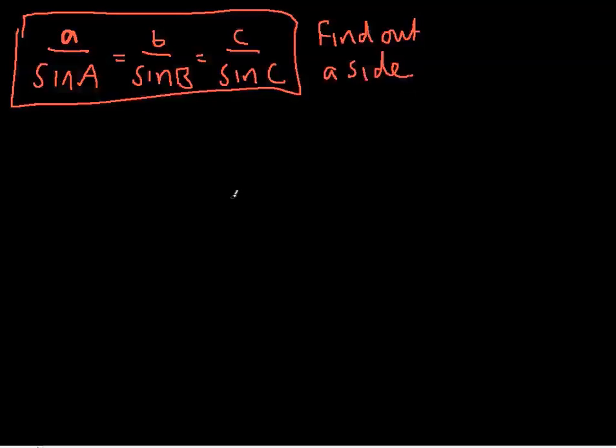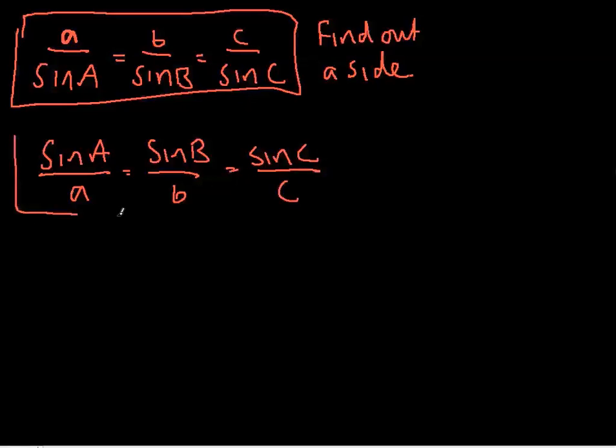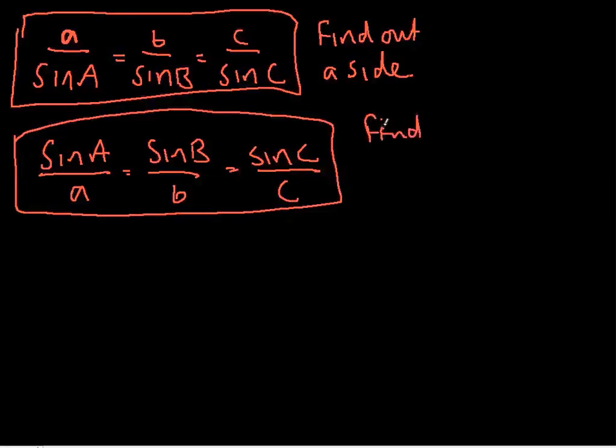So you use this one when you want to find out a side. And then you want to find out the angle, use the sines at the top. So sine A over a equals sine B over b equals sine C over c. And you will use this one to find an angle.